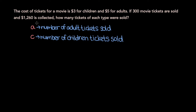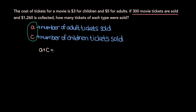So here we have two variables, A and C, which means we're going to need two equations to determine their values. We're told that 300 movie tickets are sold in total, so we know that A plus C — that is, the number of adult tickets sold plus the number of children's tickets sold — is equal to 300. So that is our first equation.